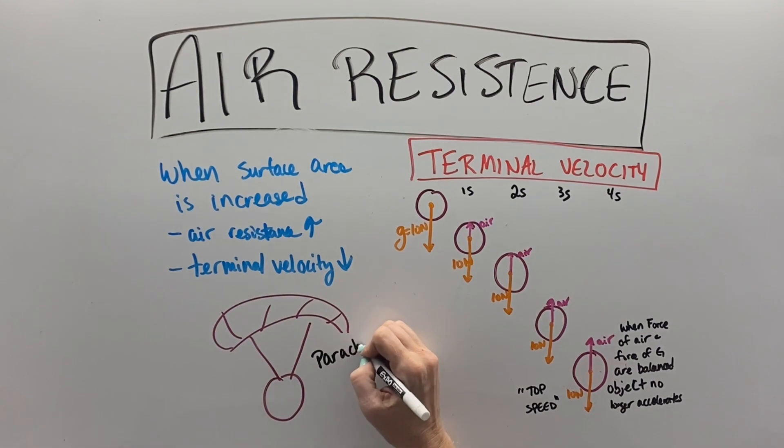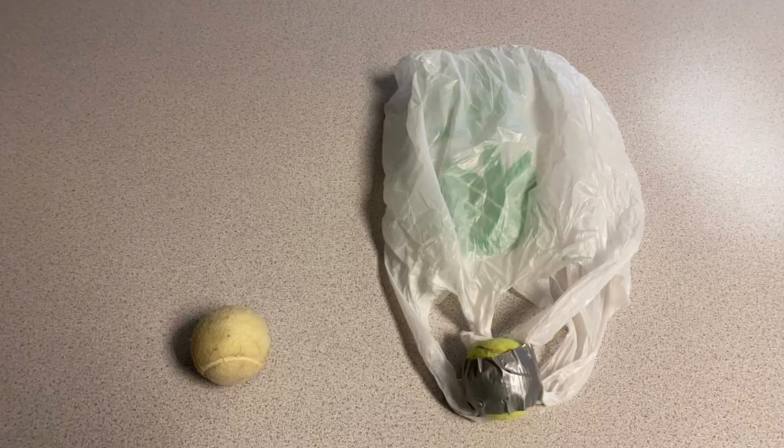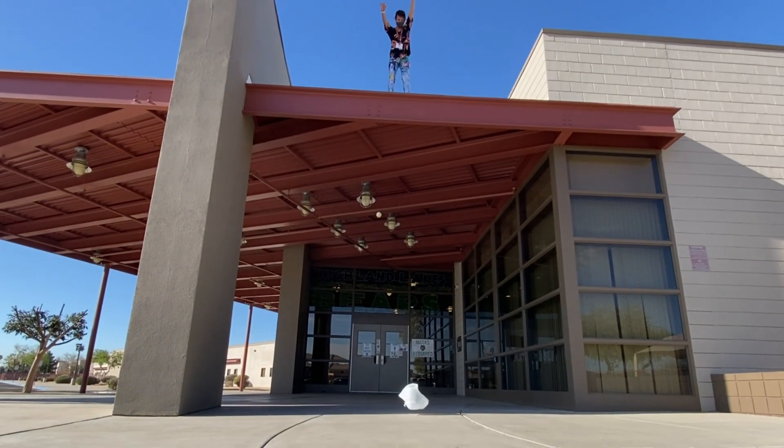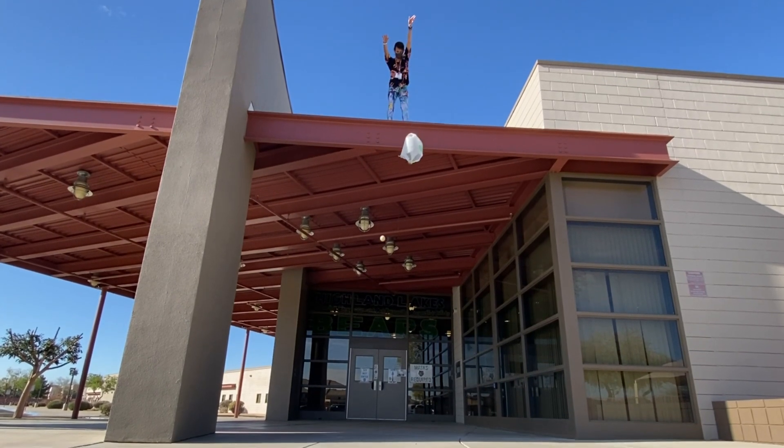So if I were to take and put a parachute on a tennis ball and drop another one that didn't, we can see here that the tennis ball without the parachute lands well before the tennis ball that has the parachute.